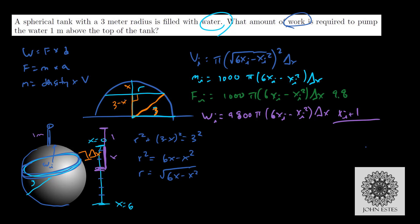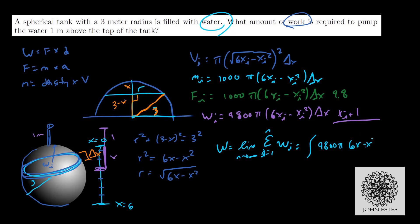So to actually calculate the total work, that's the limit as n goes to infinity of the sum from i equals 1 to n of wi, which is actually an integral. So we'll write it out: the integral of 9,800 pi times (6x minus x squared) times (x plus 1) dx, integrating from 0 to 6, from the bottom of the tank to the top of the tank.